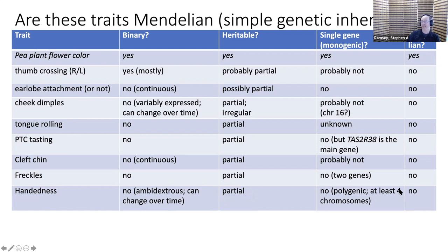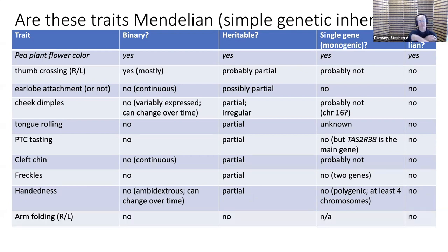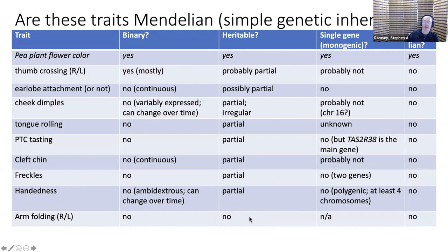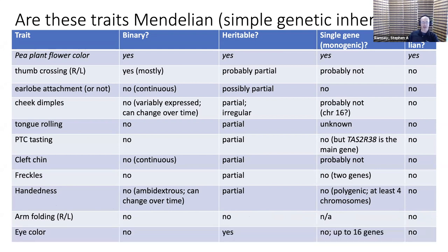Handedness is known to be partially inherited but is polygenic — at least four chromosomes seem to influence this trait, as shown by modern genomics techniques. Arm folding — whether your left or right arm is on top when you fold your arms — is not a binary trait, is not consistent for some people, and appears not to be significantly influenced by genetics. Whether it's single gene is unknown, so it's not Mendelian.